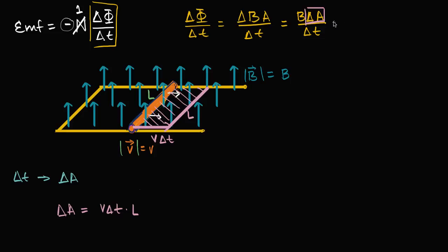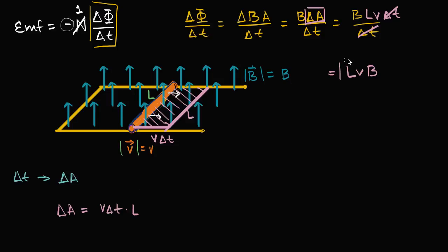So we can substitute that back. Our change in flux over change in time is going to be B times the length of our rod times the magnitude of our velocity times our change in time, all divided by change in time. Change in time divided by change in time cancels out. So our change in flux over that time simplifies to the length of our rod times the magnitude of our velocity times the magnitude of the magnetic field perpendicular to the surface. This is the formula LVB, which you will see many times in your physics class — and this is where it comes from: directly from Faraday's Law.